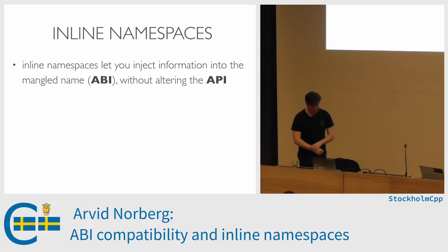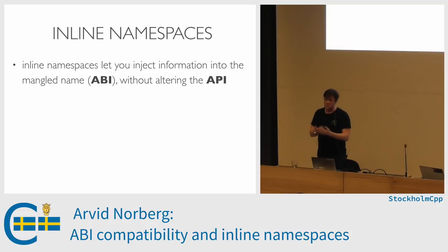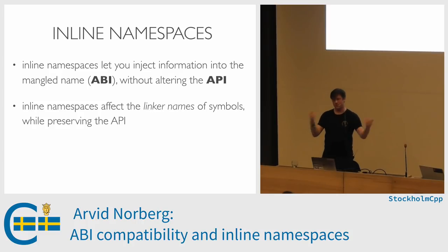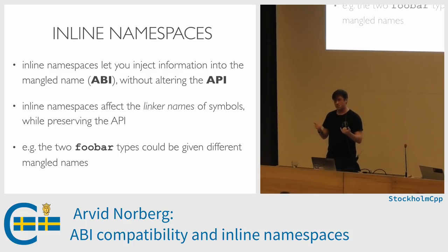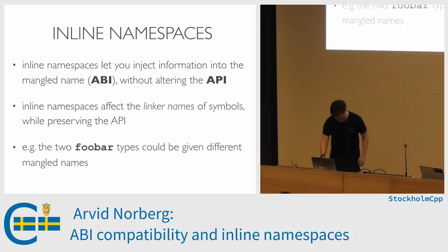On to more practical solutions. As a library author, you might not be in control over whether your library is shipped as a binary or not. Inline namespaces are how you can mitigate this problem. An inline namespace is a way to inject information into the mangled name — you can affect the ABI without altering the API. You affect the linker name of a symbol without affecting the name that the source code sees.